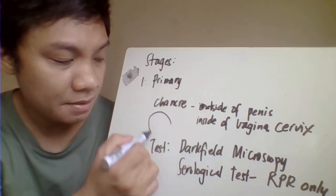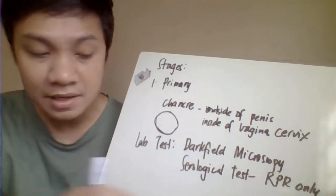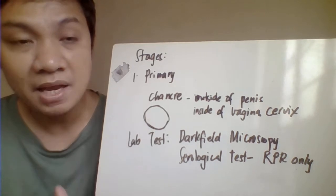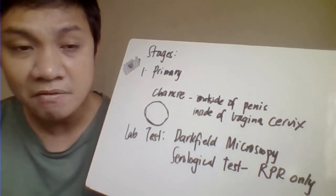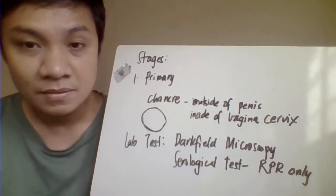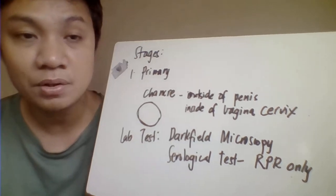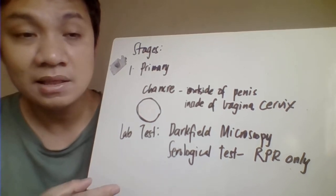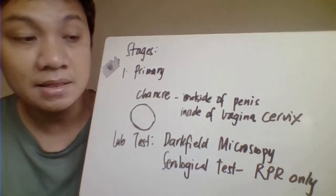The lesion is most likely found on the outside of the penis in male patients. In female patients, it is most likely found inside the vagina or cervix. Since it is internal, it often goes unnoticed, making it very difficult to eradicate the infection, especially in sexually active individuals.